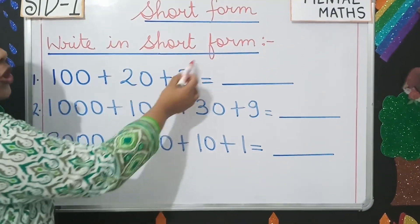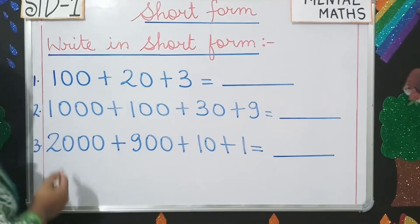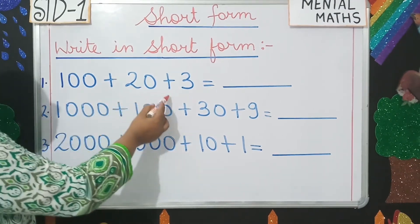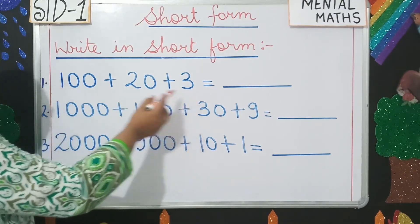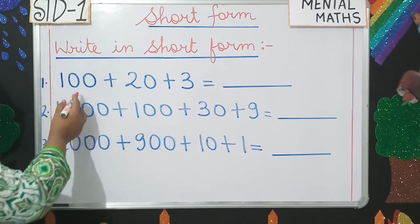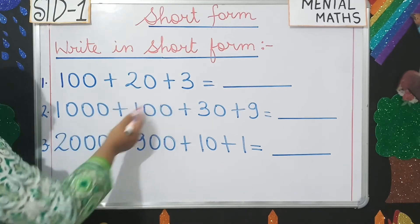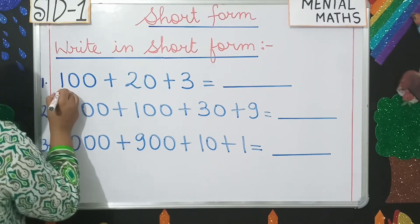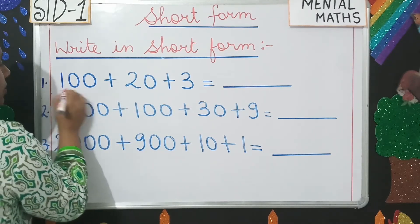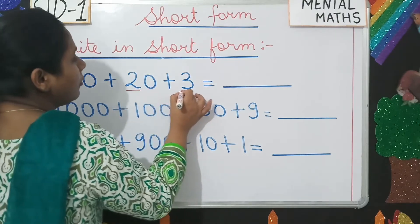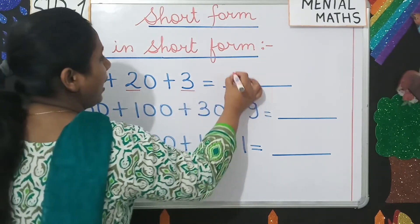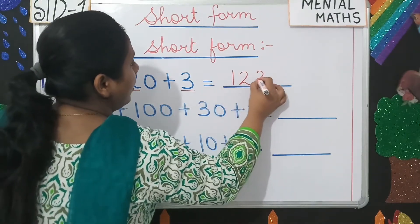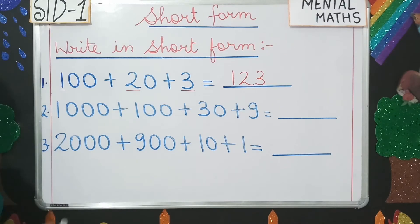Write in short form. Number one: 100 plus 20 plus 3. What do you have to do? You'll write the short form by picking the first digit of each: 1, 2, 3. You'll write 123. Clear?